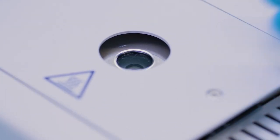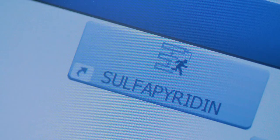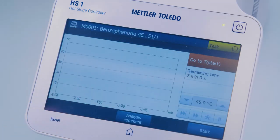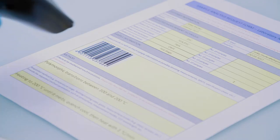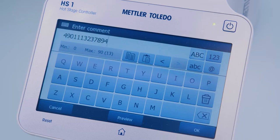With both systems you can start frequently used methods by one click. Simple and efficient. Sample identification with a barcode accelerates your workflow even further.